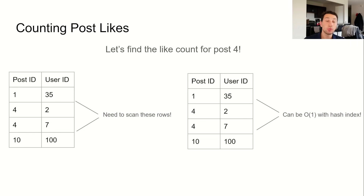Instead, it may really benefit us to pre-compute the count of likes for all posts. While this may have less of a performance benefit for posts with a few likes, it can make a noticeable difference for all of these celebrity posts. Let's consider what we should do about table partitioning.